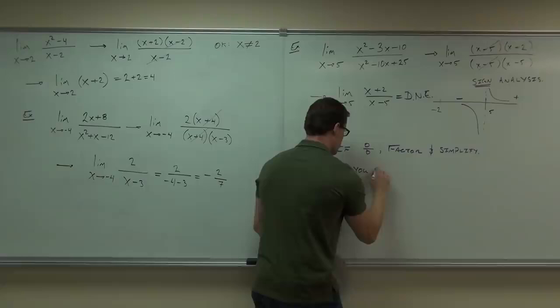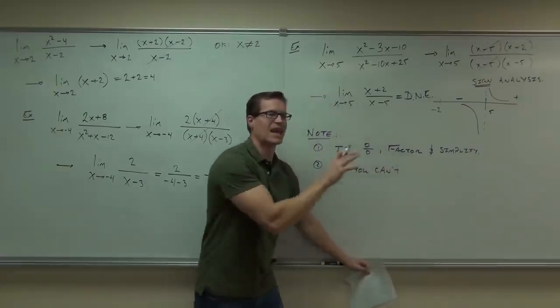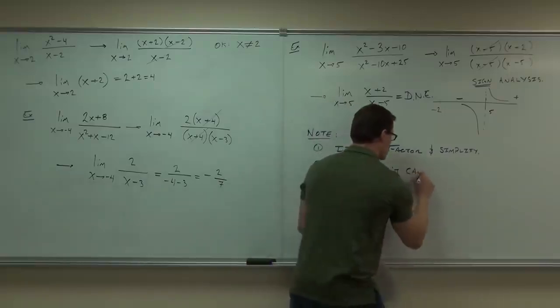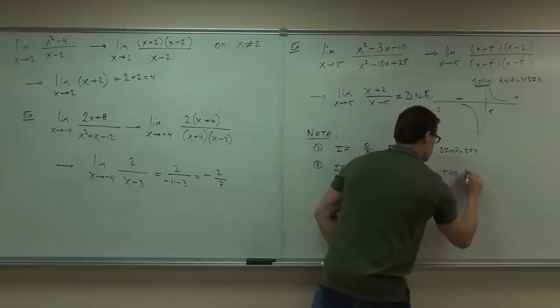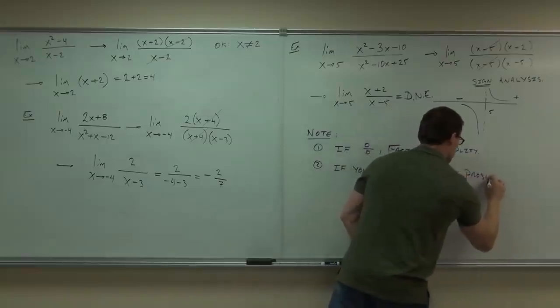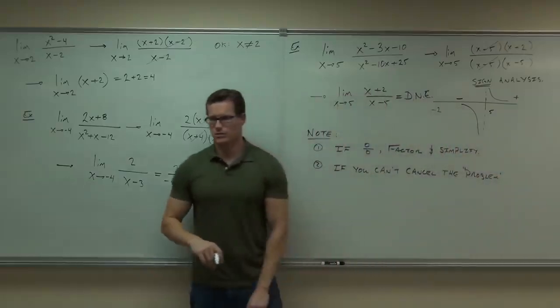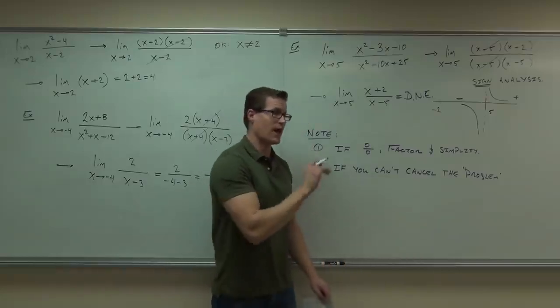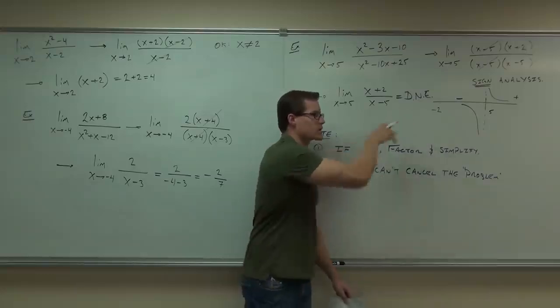If you can't get rid of the problem, if you can't cancel the problem - because y'all love the word cancel, right? - if you can't cancel the problem, that means it's not a hole. If you can cancel the problem, it's a hole. If you can't cancel the problem, that means you have an asymptote at that point. What you're going to need to do is evaluate it with a sign analysis.